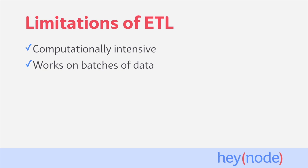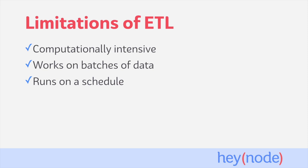Typically, ETL works with batches of data at a time — your ETL process isn't running 24/7 on all available data. You will start the ETL process and specify what data needs to be processed through the pipeline. This is opposed to something like a real-time ETL process, which are becoming more common these days. These batches are often scheduled to run at a particular time, perhaps at the end of the day or the beginning of each month. Because of this, it's important to understand that the output of your ETL process will lag the state of your data source. For applications where a delay of days, hours, or minutes is unacceptable, this will rule out ETL as a possibility completely. Because ETL can be computationally intensive, runs on batches of data at a time, and is often run on a schedule, there will always be some degree of lag behind the source of the data.